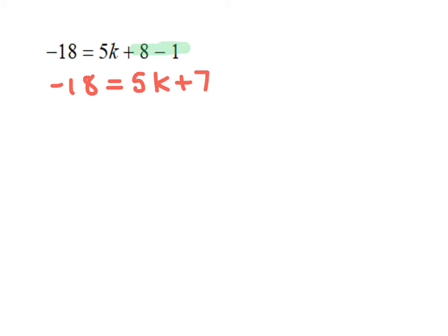The next step is to bring all terms with the variable to one side, which we have already done — 5k is by itself on the right side. Now we need to bring all the constants to the other side. So I'm going to subtract 7 from both sides, which gives us 5k equals negative 25.